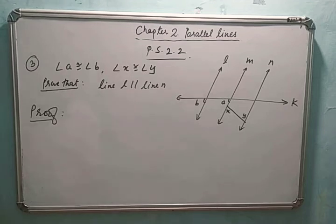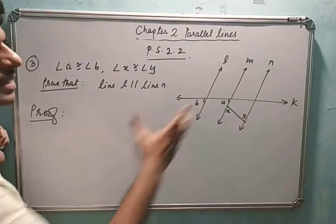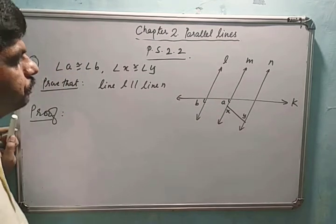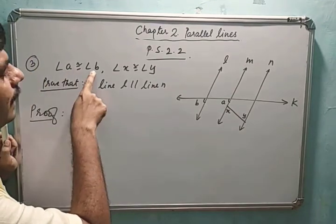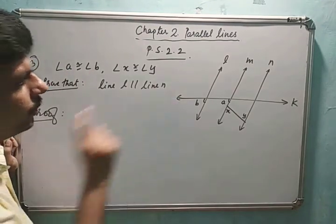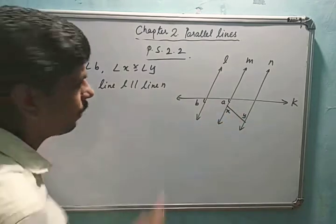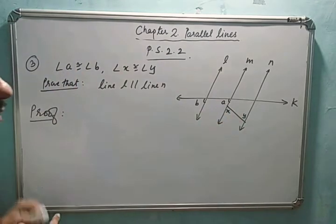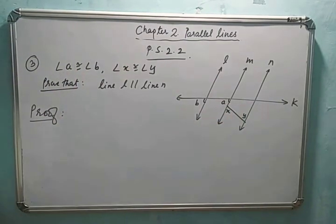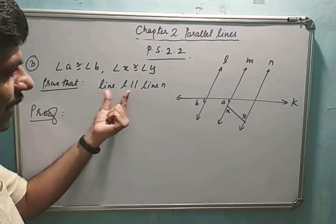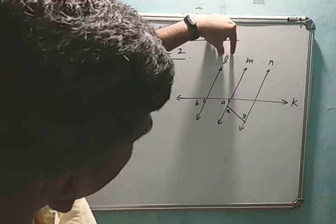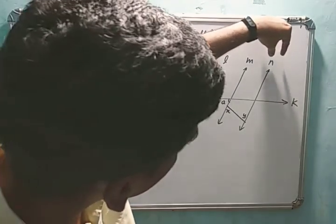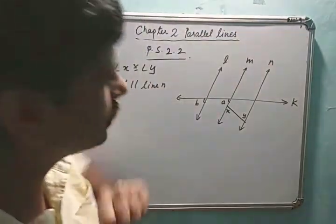Students, now we are going to do the third problem. From the figure, you can see angle a is congruent to angle b, and angle x is congruent to angle y — this is our given data. We have to prove that line l is parallel to line n.